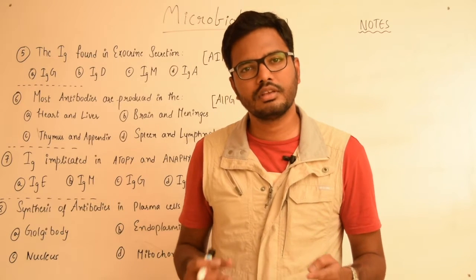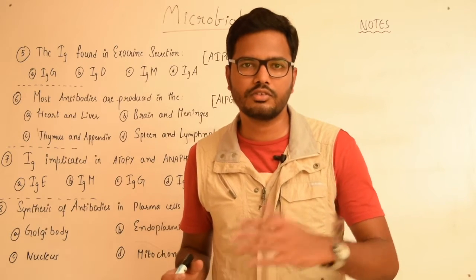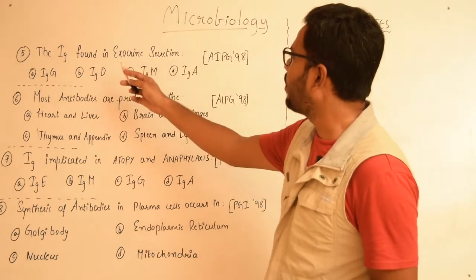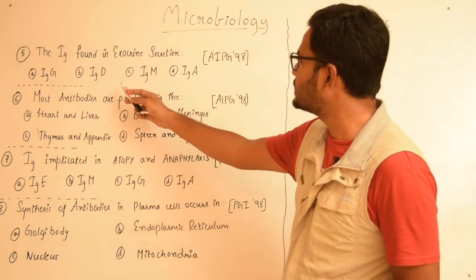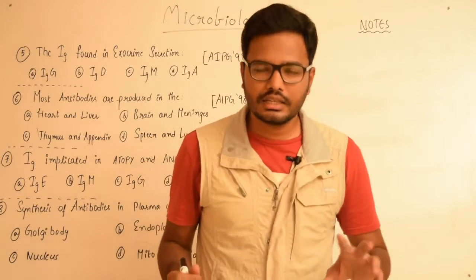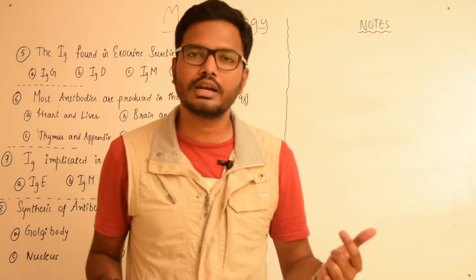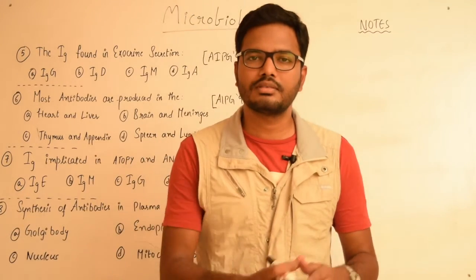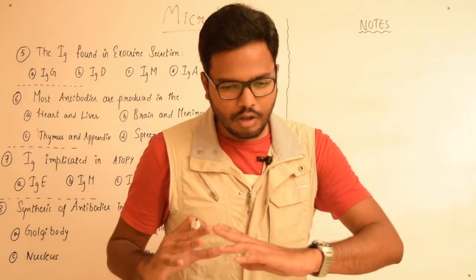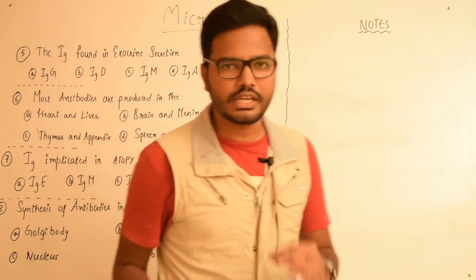Hi, in this video let's see a few more multiple choice questions. This video is the continuation of the previous video which I posted. The immunoglobulins found in exocrine secretion: IgG, IgD, IgM, or IgA? As I have previously discussed, IgA is a secretory immunoglobulin produced by plasma cells lining mucosal and glandular epithelium. We have basically serum IgA and secretory IgA, and the only immunoglobulin found in secretion such as saliva is IgA.